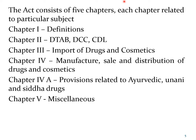The DNC Act consists of five chapters, each dealing with a particular topic. Chapter 1 deals with definitions. Chapter 2 deals with the Drug Technical Advisory Board, Drugs Consultative Committee, and the Central Drug Laboratory responsible for testing drugs and cosmetics. Chapter 3 deals with rules and regulations for import of drugs and cosmetics. Chapter 4 deals with the procedure for manufacture, sale and distribution of drugs and cosmetics. Chapter 4A gives provisions related to Ayurvedic, Yunani, Siddha and homeopathic drugs, and certain other aspects are covered under Chapter 5.